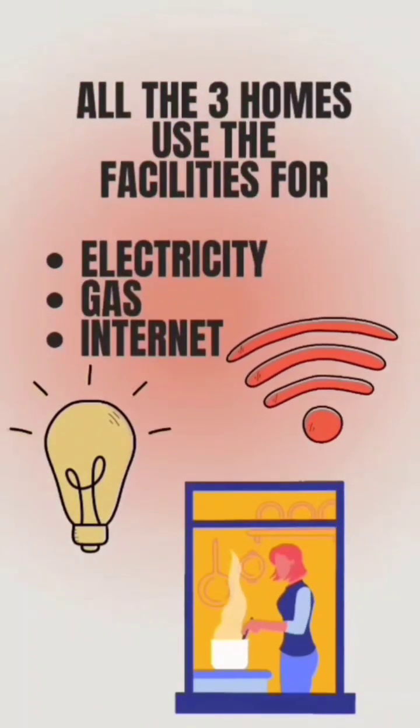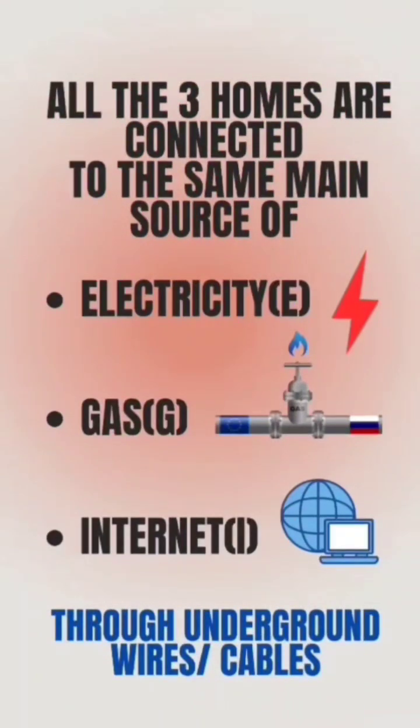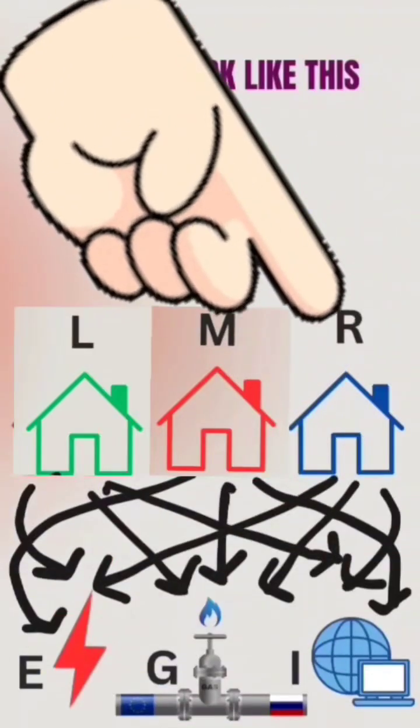All three homes use facilities for electricity, gas, and internet. All three homes are connected to the same main source of electricity, gas, and internet in a network like this.